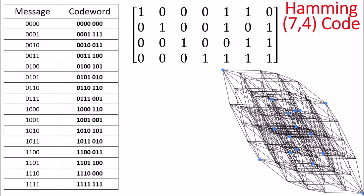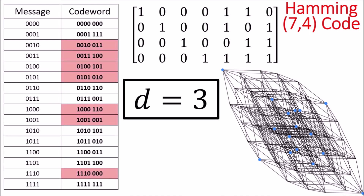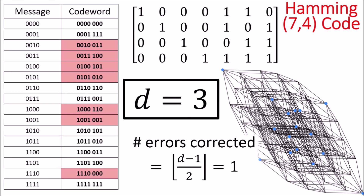In the case of the Hamming 7-4 code, you'll find that the smallest non-zero code words have a weight of 3. And with a minimum distance of 3, we are guaranteed to be able to correct one error bit per code word. So that's why the Hamming 7-4 code can fix one error bit per code word.